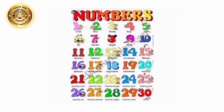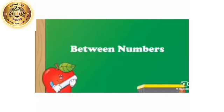Let's revise the numbers once again. 1, 2, 3, 4, 5, 6, 7, 8, 9, 10, 11, 12, 13, 14, 15, 16, 17, 18, 19, 20, 21, 22, 23, 24, 25, 26, 27, 28, 29, 30. Understood, children? Very good.